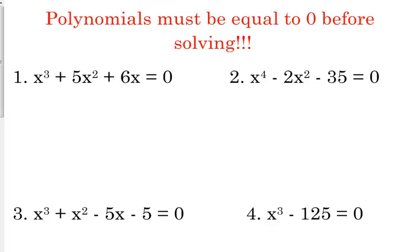Example number one. Our first instinct, just like with quadratics, is to factor as much as possible. So what's the first thing that we see we need to factor out of number one? A GCF of x. So that reduces the degree to x squared plus 5x plus 6. And then we should ask ourselves, well, can I factor that trinomial? And we can.